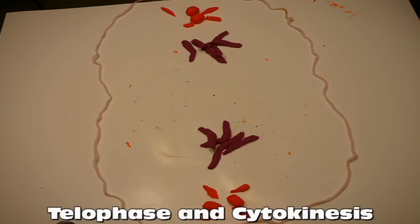During cytokinesis, the cleavage furrow forms and the cell is pinched into two, creating two separate identical cells.